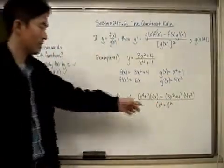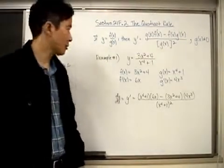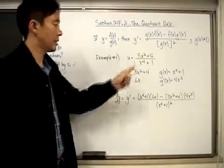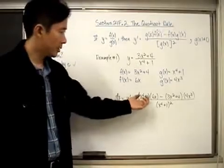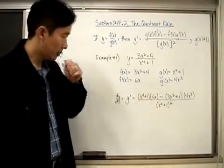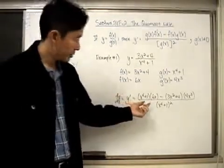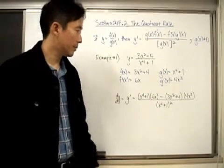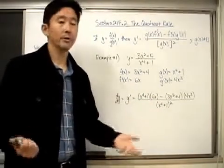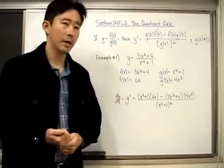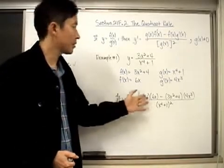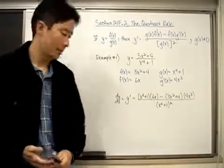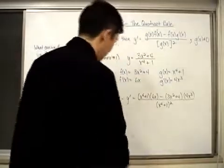And there you go — that's how you use the Quotient Rule to find the derivative. Of course, you can go ahead and factor or simplify — hopefully something might cancel — but for right now let's just focus on making sure we can get the right expression.